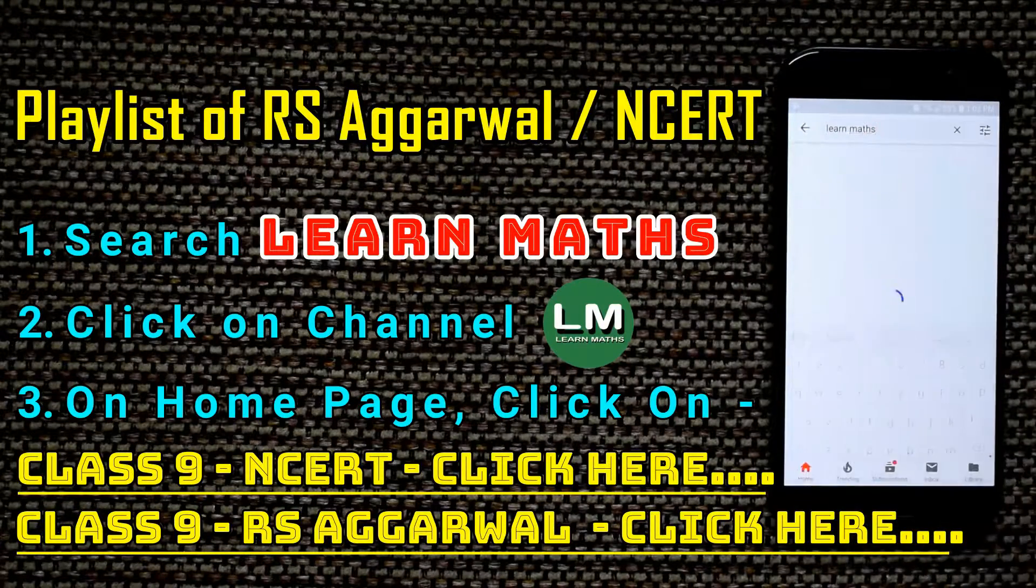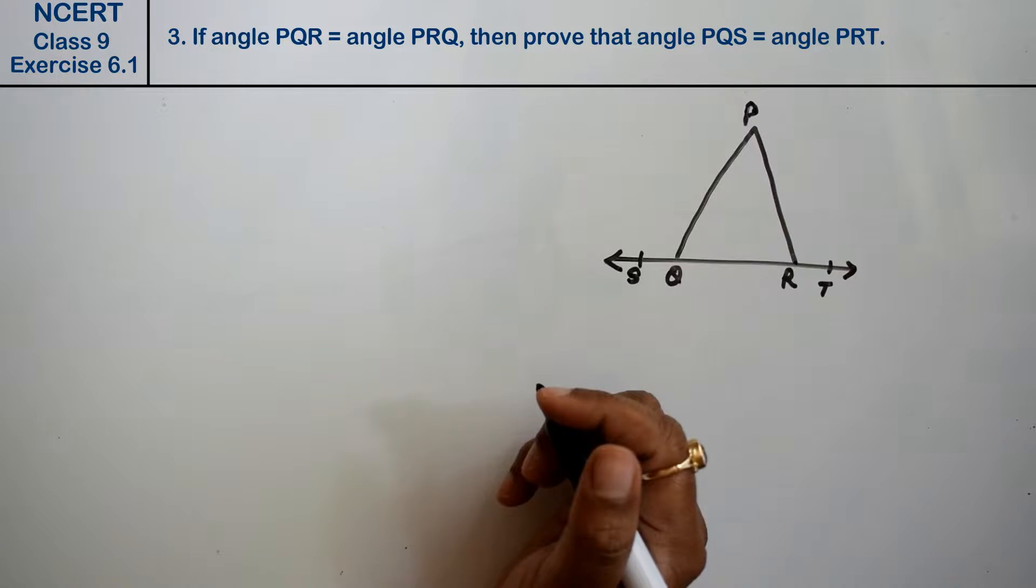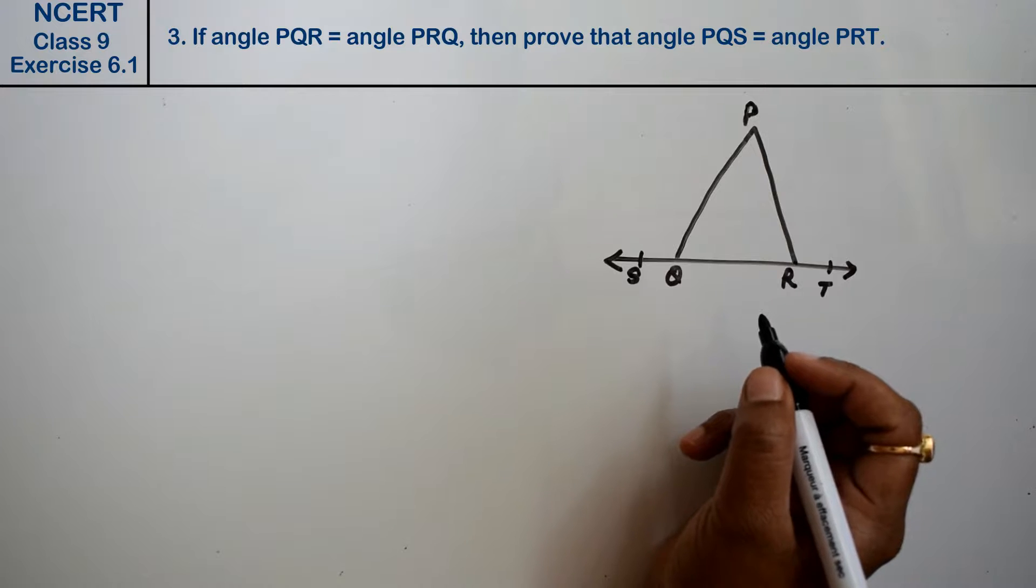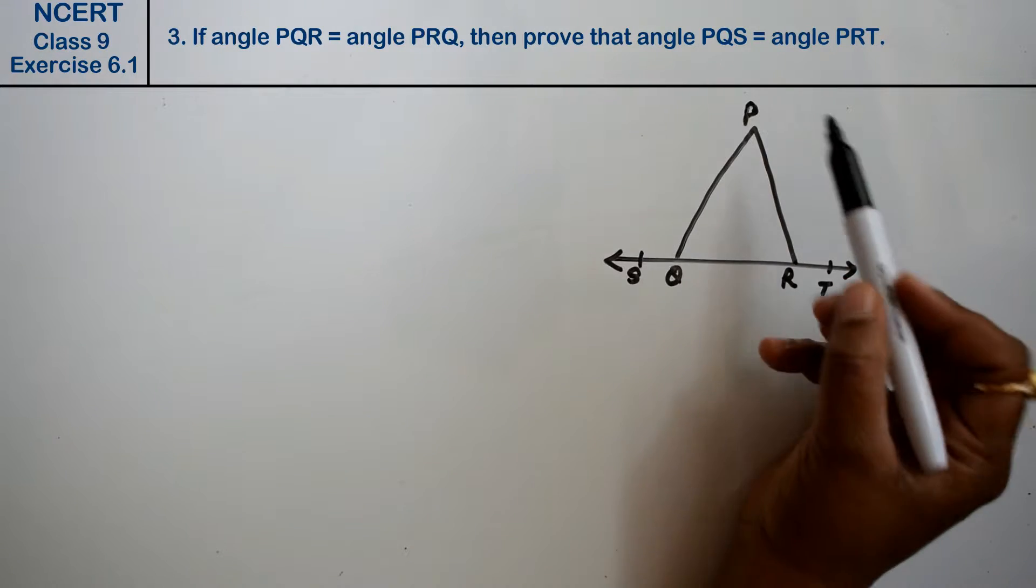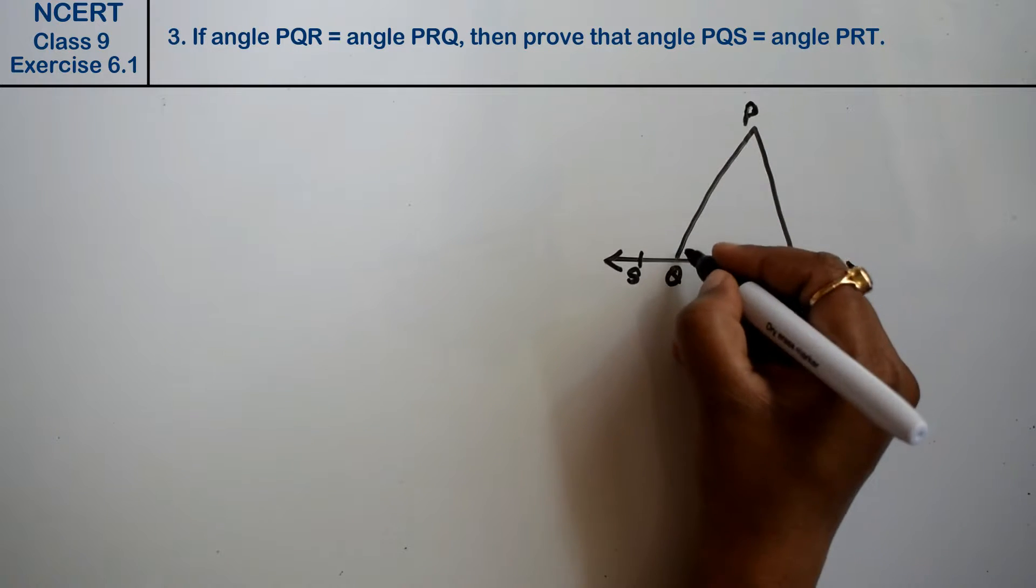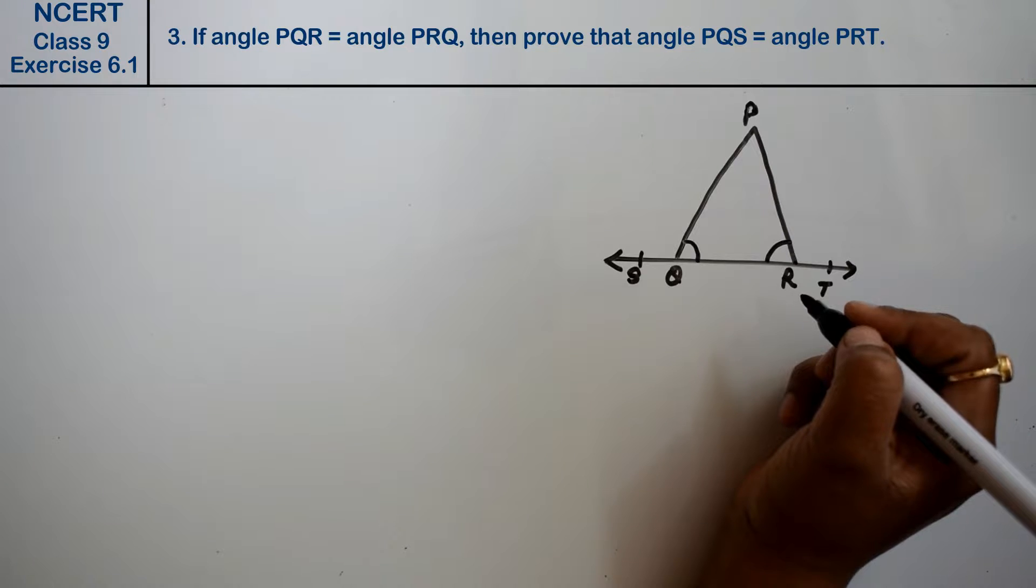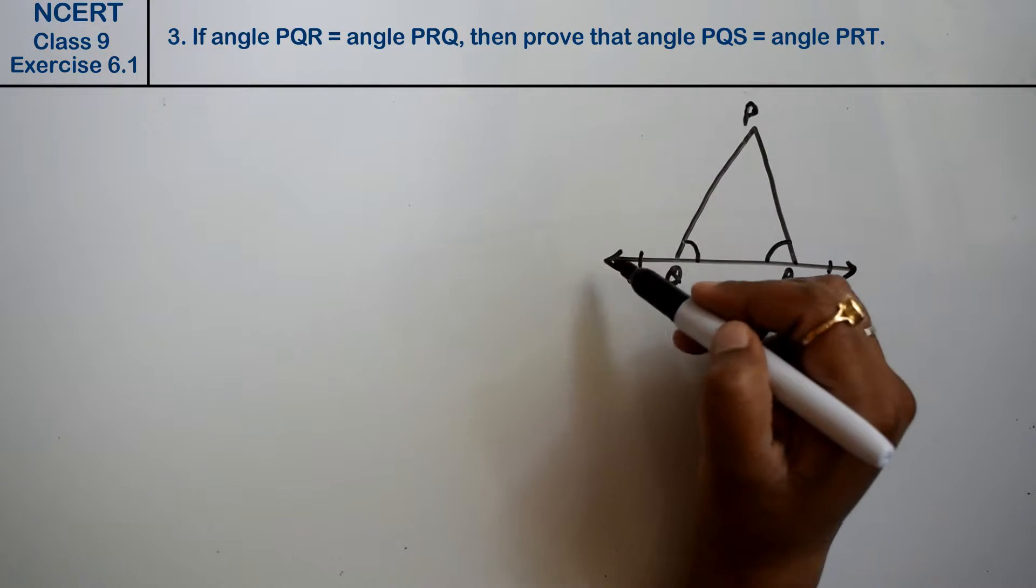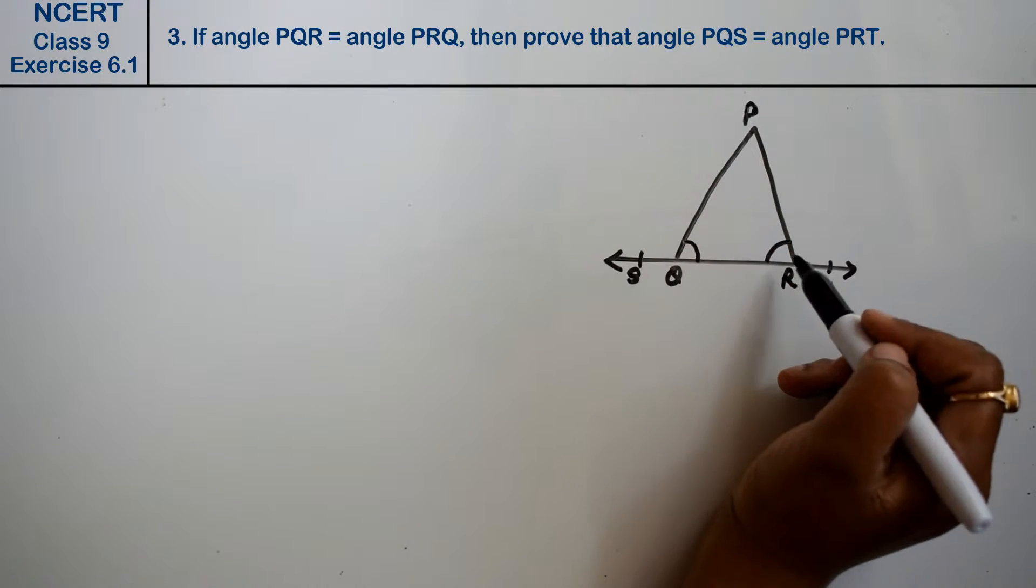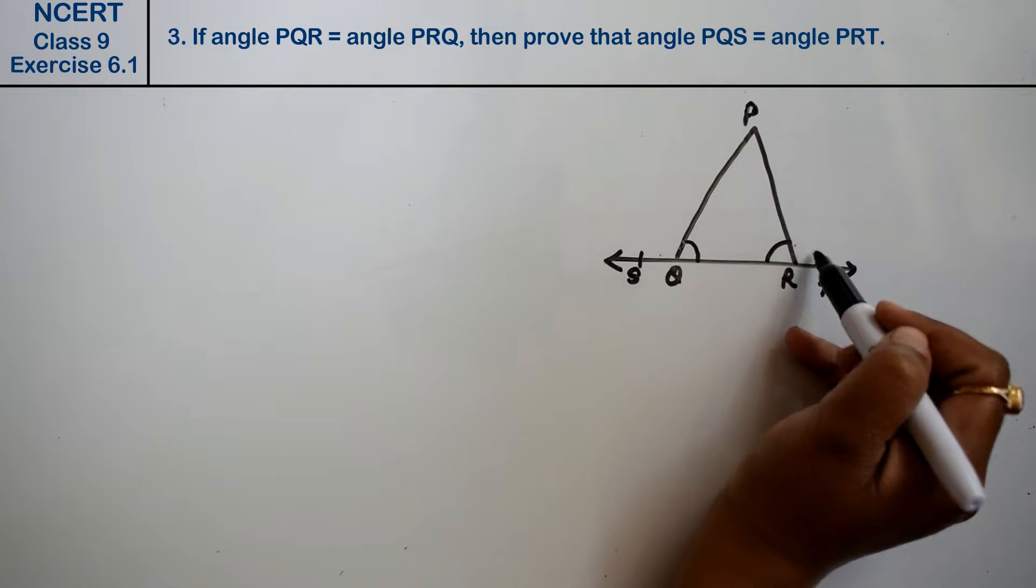Let's do question number 3 of exercise 6.1 on lines and angles. In figure 6.15, angle PQR equals angle PRQ. This angle is equal to this angle. Then prove that angle PQS equals angle PRT. So we have to prove that this angle is equal to this angle.